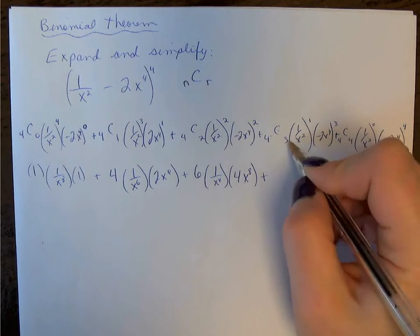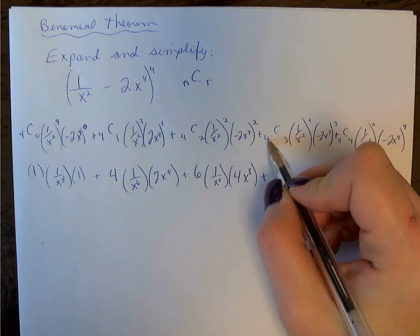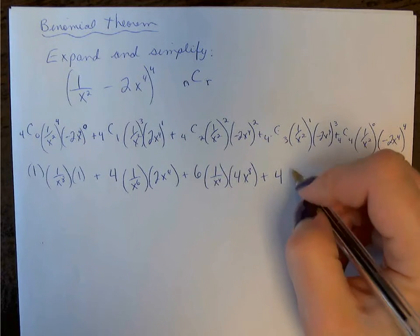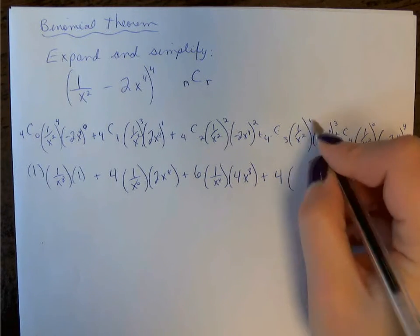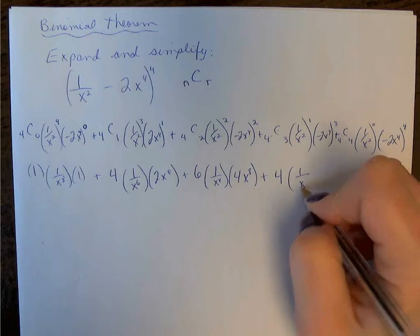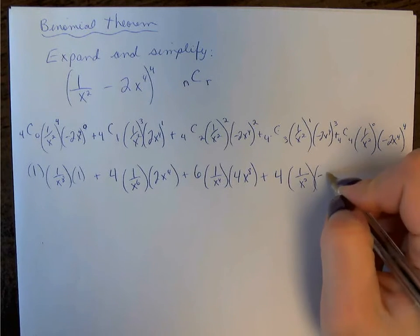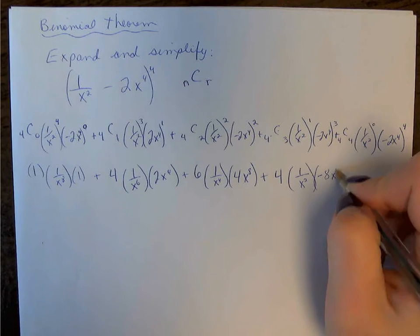plus 4C3. When r is 1 less than n, the n value is the answer, 1 to the 1, x squared, -2 cubed remains negative, so we have -8x to the 12,